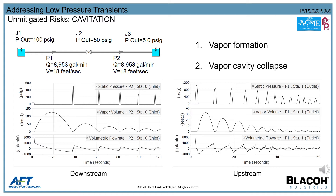Eventually the flow reverses and the vapor pocket collapses, causing the pressure to spike over 500 psi. On the upstream side, a high-pressure transient is immediately initiated, causing the pressure to spike to over 1,000 psi. As the flow oscillates back and forth, the same series of events that immediately occurred on the downstream side now occur on the upstream side, and multiple bursts of pressure ensue until the energy is eventually dampened by friction.